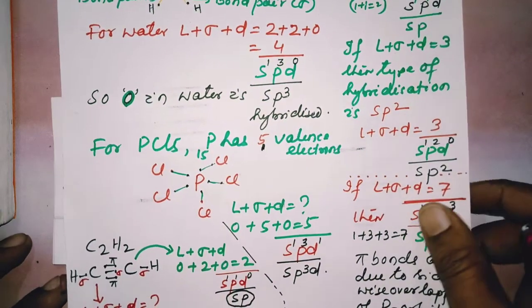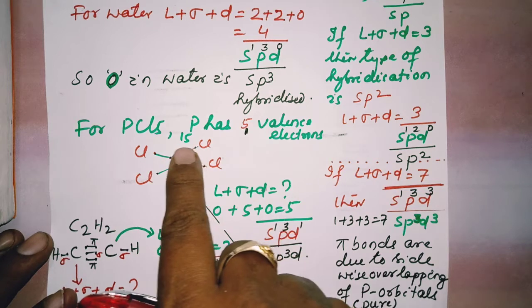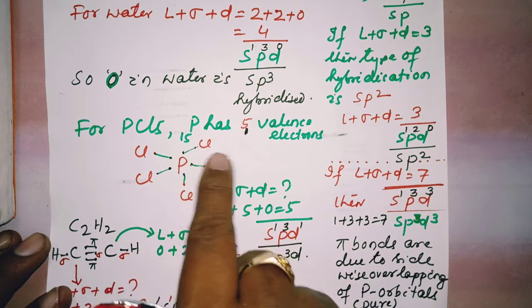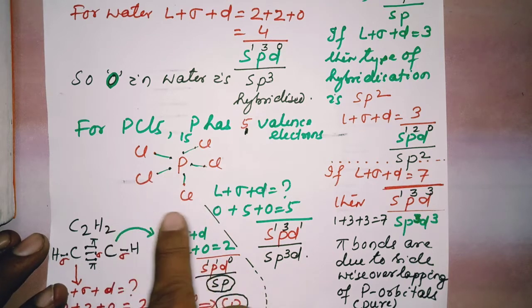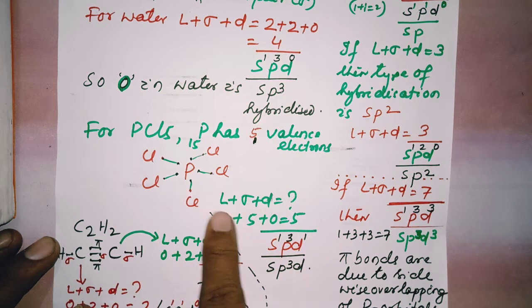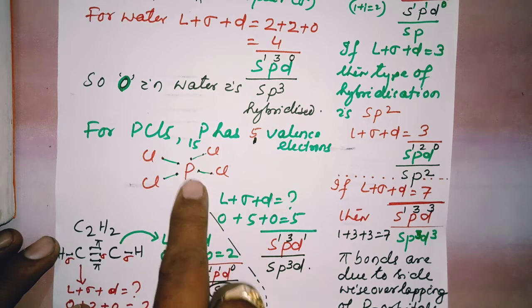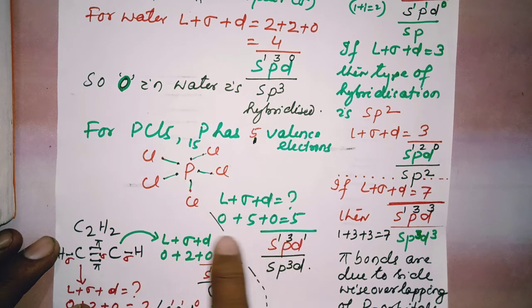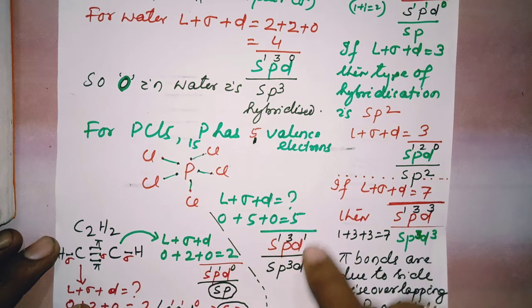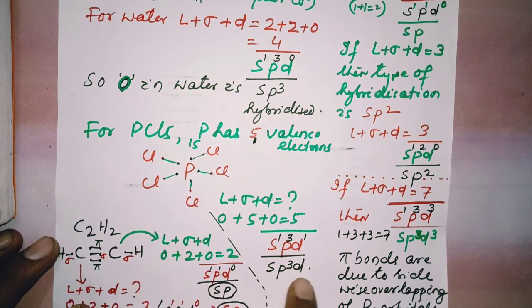For PCl₅: phosphorus has atomic number 15 with configuration 2,8,5, giving 5 valence electrons. It forms 5 bonds with 5 chlorine atoms. So L=0, sigma=5, D=0, giving a total of 5. S takes 1, P takes 3 (1+3=4), and 5 minus 4 equals 1, so D takes 1. Therefore, the hybridization of P in PCl₅ is SP³D.